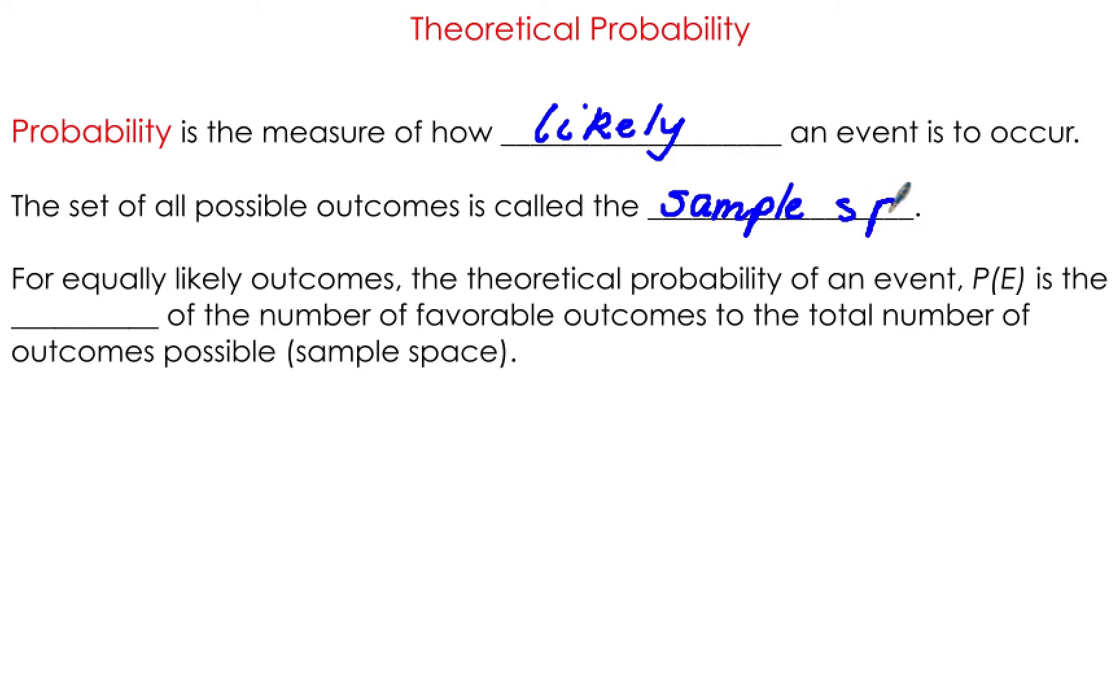For equally likely outcomes, the theoretical probability of an event, P(E), is the ratio of the number of favorable outcomes to the total number of outcomes possible, the sample space.